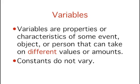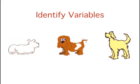Let's look at a few examples. Here you can see three dogs of different breeds. Can you think of ways in which these three dogs vary? In other words, can you think of some properties or characteristics of these dogs that can take on different values or amounts?